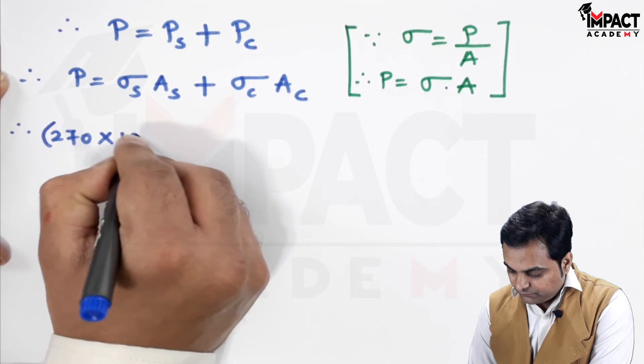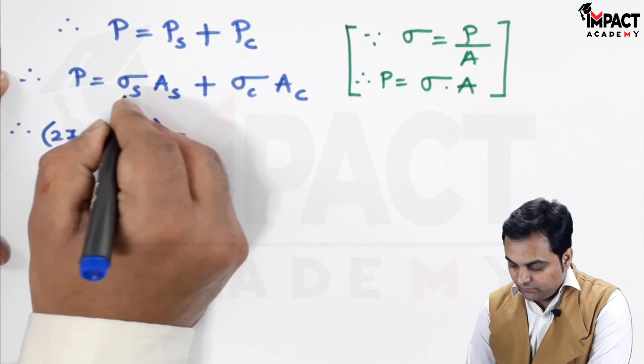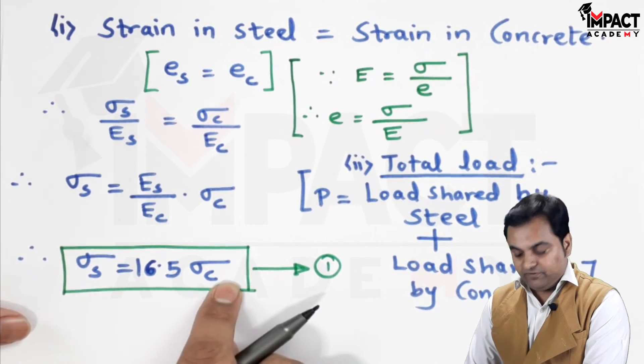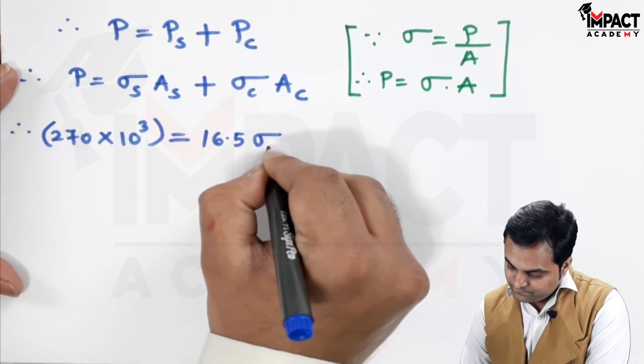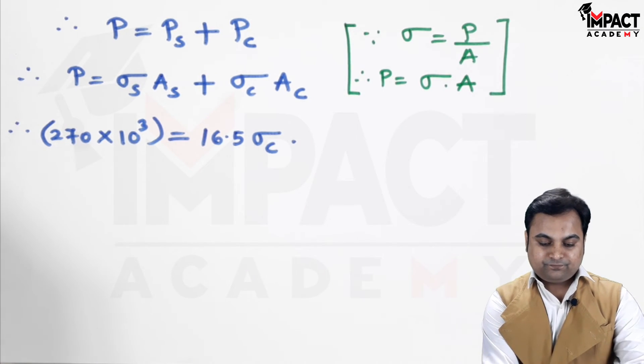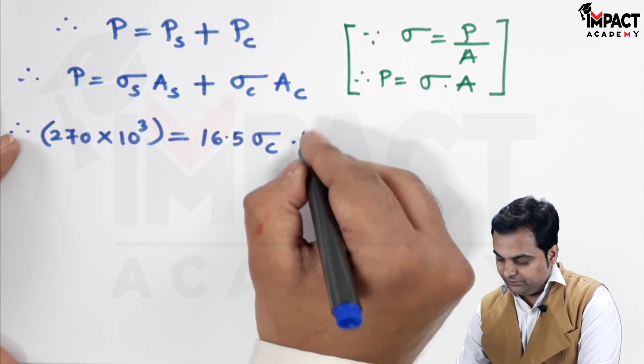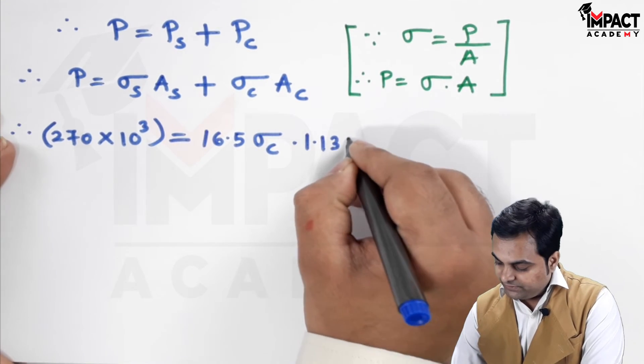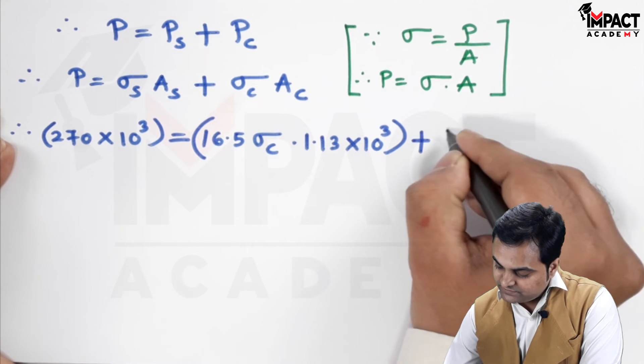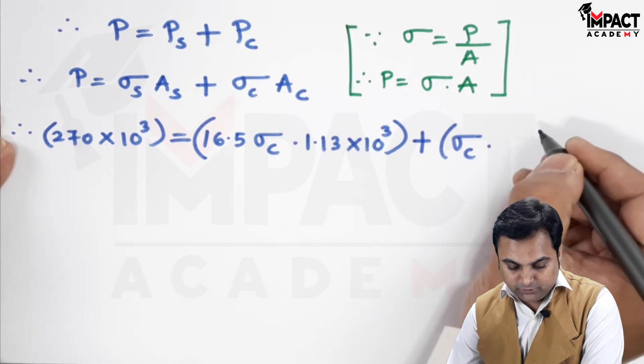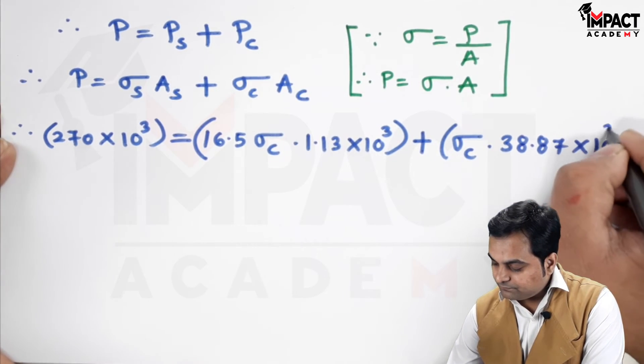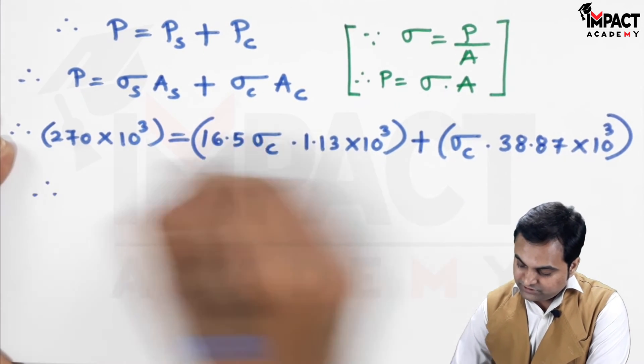The total load is given in the problem, 270 into 10 raise to 3. Now, in place of sigma S, I will put the value 16.5 sigma C into area of steel. The value we had calculated previously, 1.13 into 10 raise to 3.